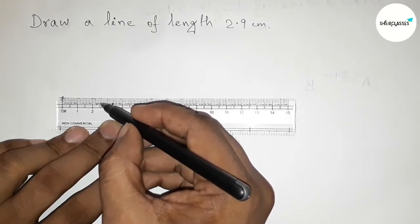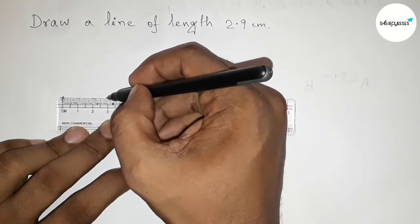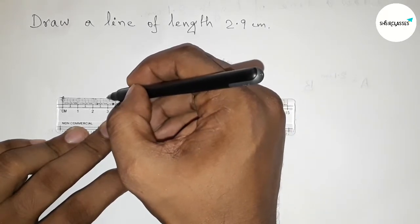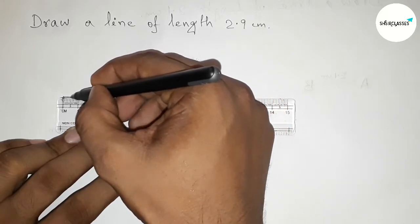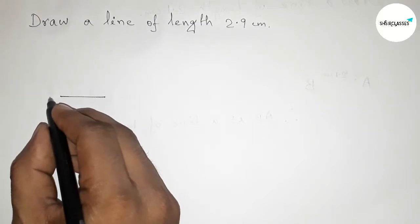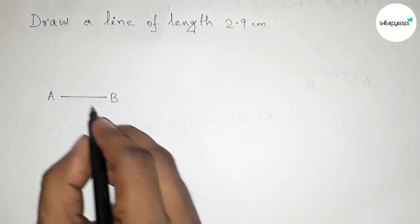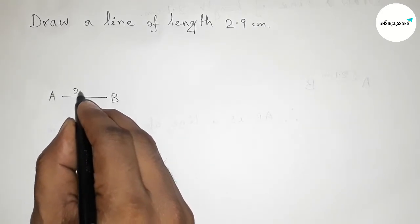So this is 2.9 centimeter. First mark this point and join the line. Now take a point here A and here B. So AB is a line of length 2.9 centimeter.